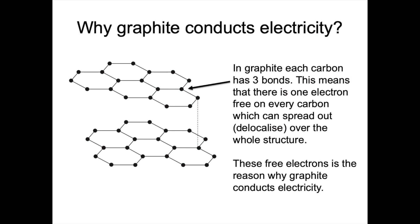Another difference between graphite and diamond is the fact that graphite has the ability to conduct electricity. In graphite each carbon has three bonds. Carbon is a group four element so it has four electrons in its outer shell. Only three of these electrons are used in bonding, so one electron is spare — it's free and able to move over the whole structure. We call this ability to spread over the whole structure delocalisation. Having delocalised electrons or free electrons is the reason why graphite can conduct both electricity and heat.